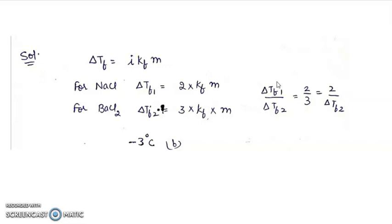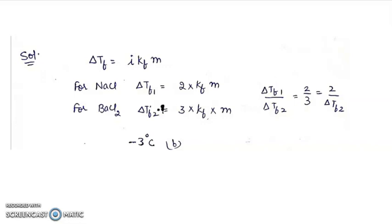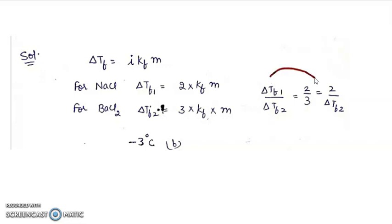Delta Tf1 is given as 2 in the question, so we put 2 here. So it will be minus 3 degree C after solving.